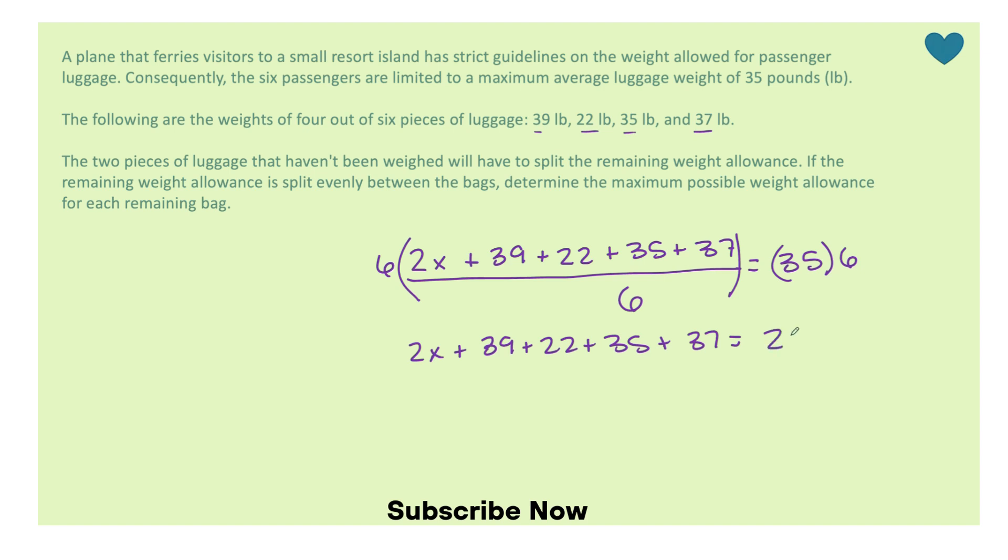So I'm going to add up all of these weights. I have 2x plus 39 plus 22 plus 35 plus 37. That equals 133, which equals 210.